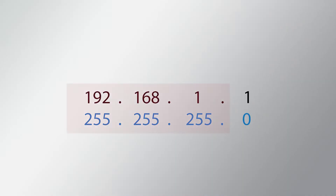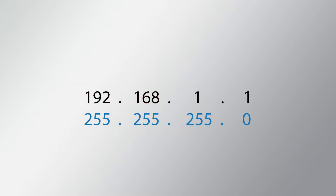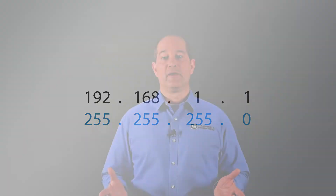The value of 255 indicates the corresponding octet in the IP address is masked. In this example, the first three octets are masked, so the network address is 192.168.1 and the host address is 1, with room for another 253 hosts on the network. The number of octets available for the host address determines how many devices can be added to the network.